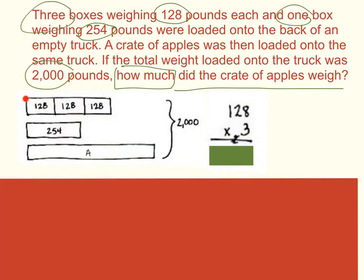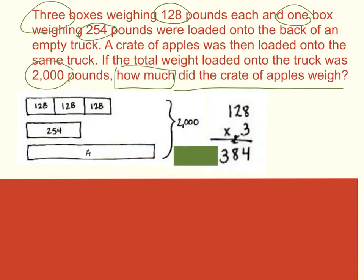First, I need to solve my multiplication problem: 128 times 3. Start in my ones column — 3 times 8 ones would give me 24. I put my 4 in my ones place and carry my 2 to my tens place. 3 times 2 tens would be 6 tens, plus 2 more tens would be 8 tens, so I put my 8 in my tens place. Finally, we multiply 3 times 1 hundred, which would be 3 hundreds. My product would be 384. The total weight of my three boxes is 384.